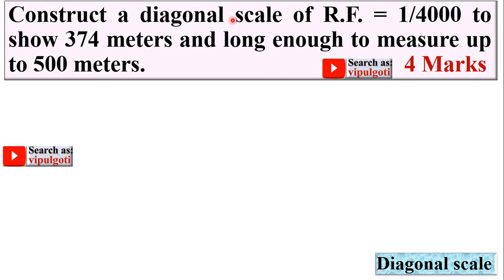Construct a diagonal scale where RF is equal to 1 upon 4000. RF means representative fraction, to show 374 meters and long enough to measure up to 500 meters. We have to indicate on the scale 374 meters. Here three digits are there, and so you can understand it is a diagonal scale.